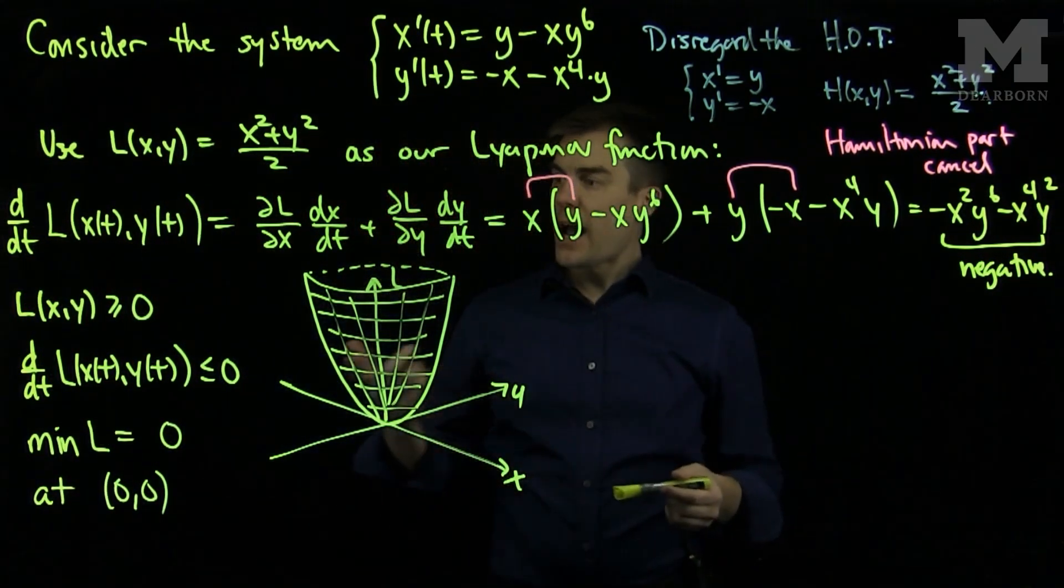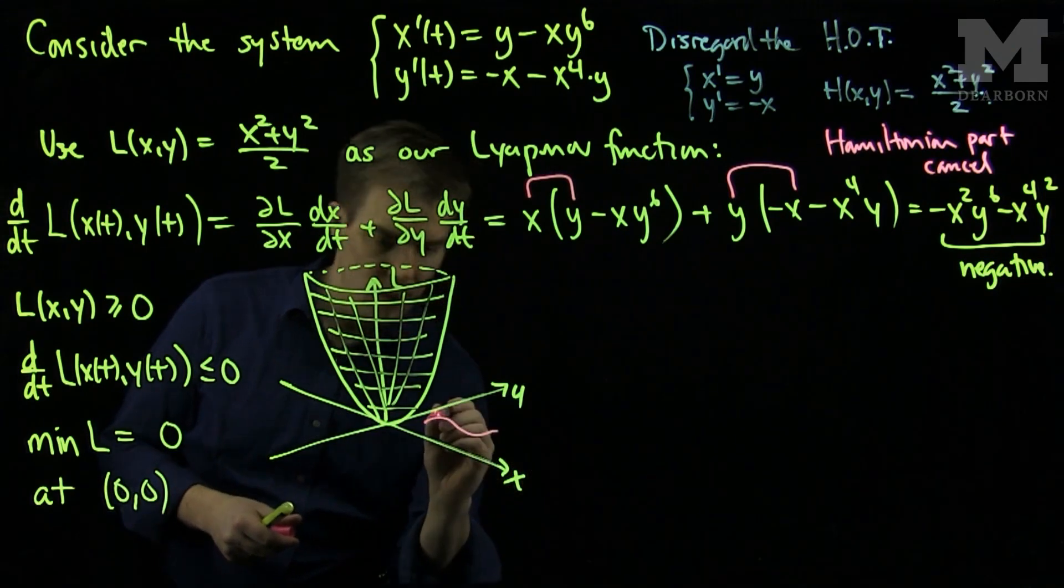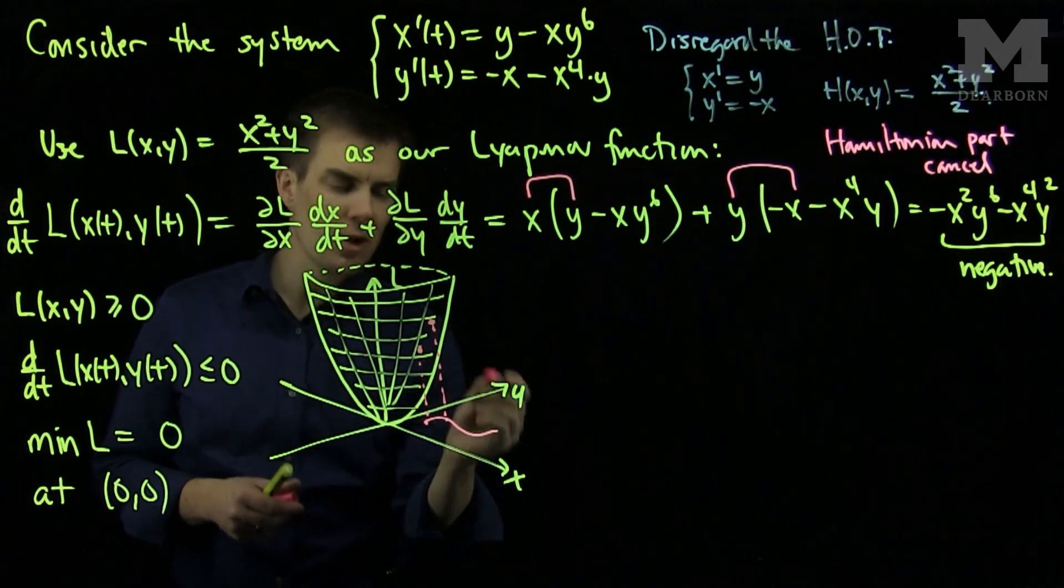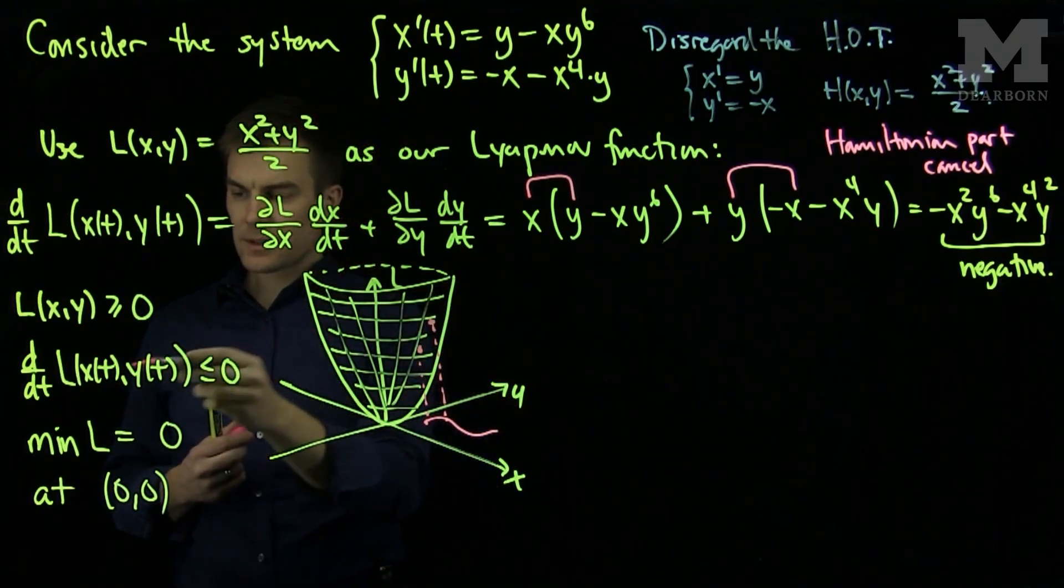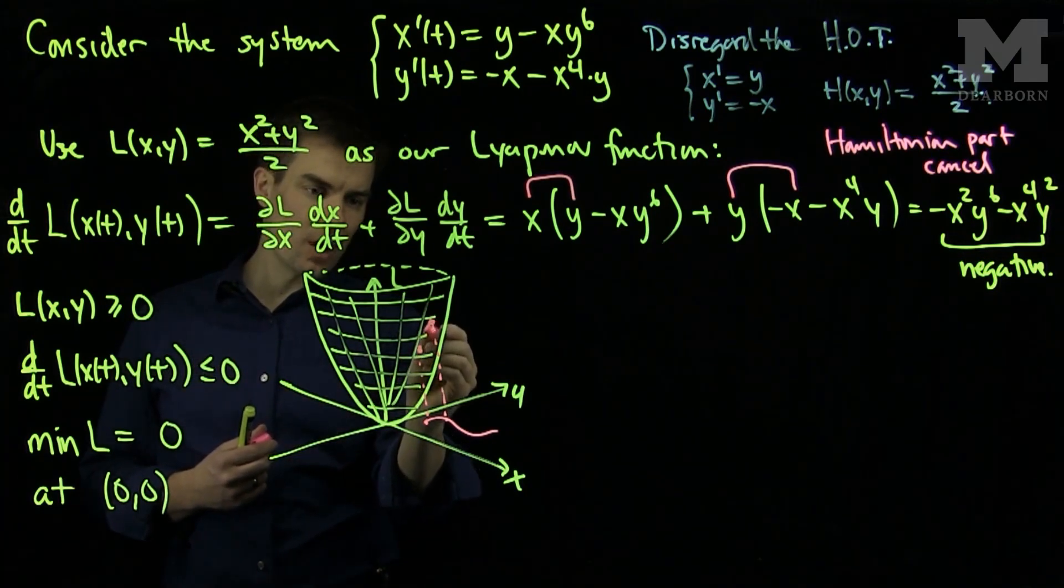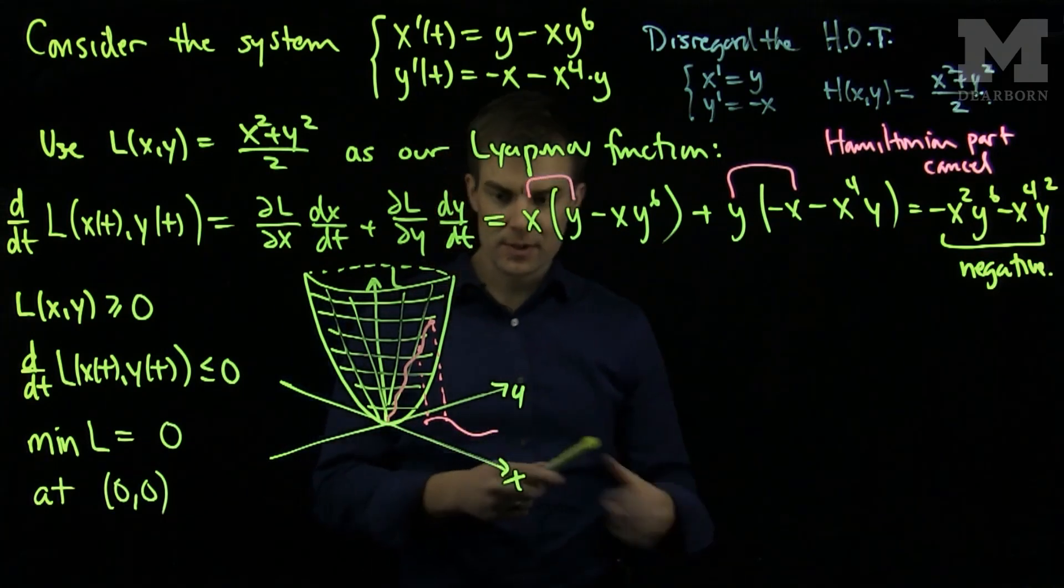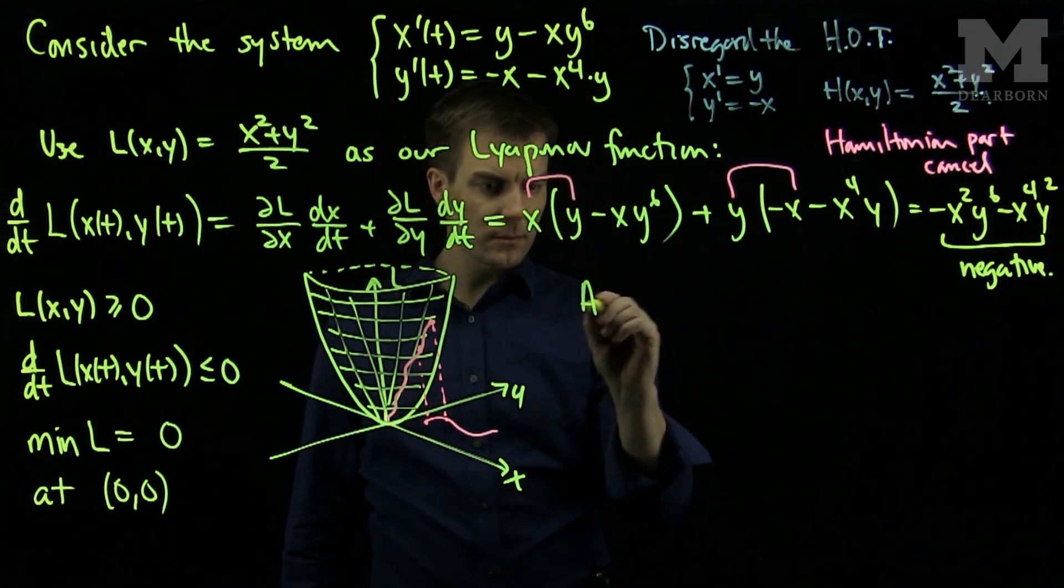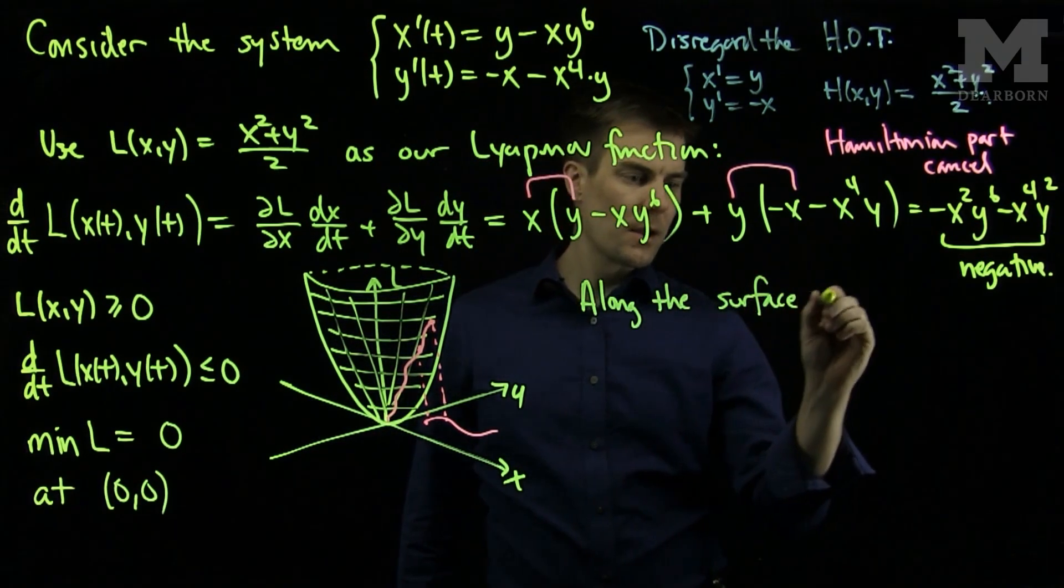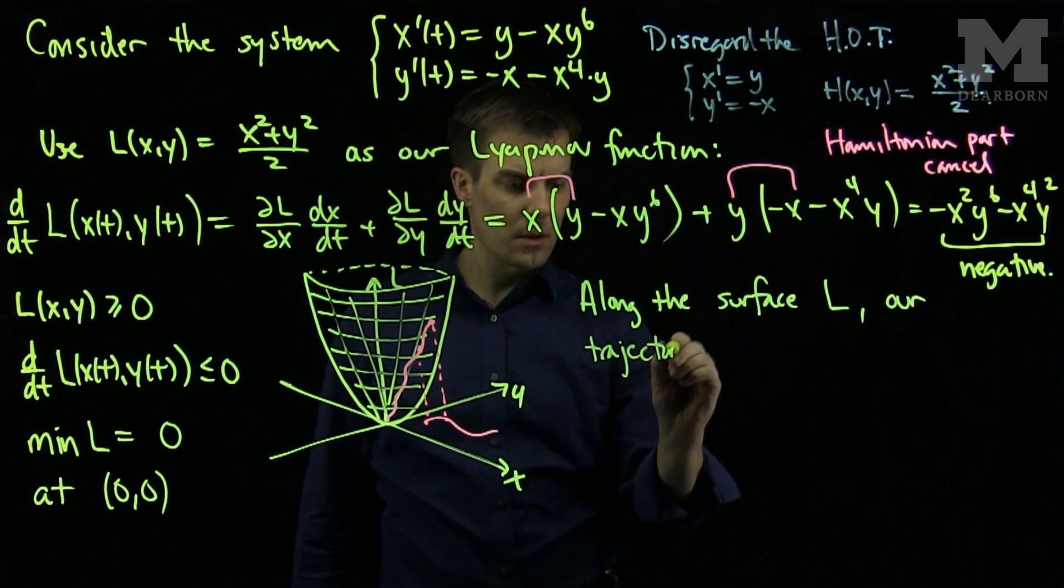Now, any trajectory of this system in the xy plane is mapped up onto my surface. And we know that as time increases, the derivative with respect to t of the trajectory on this function decreases. So along the surface, my trajectory decreases. So along the surface L, our trajectory decreases.